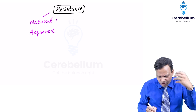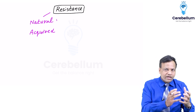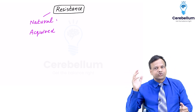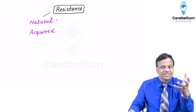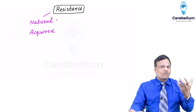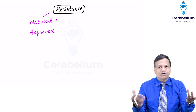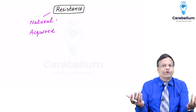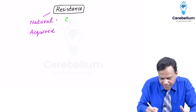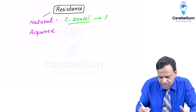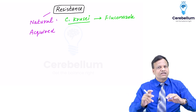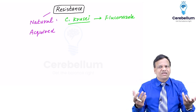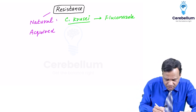Natural resistance means right from the beginning the organism is resistant to the drug. For example, mycoplasma is inherently resistant to any cell wall synthesis inhibitor because mycoplasma does not have a cell wall. Similarly, Candida krusei is inherently resistant to fluconazole. Natural resistance does not worry us because we know from the beginning that the drug will not work.